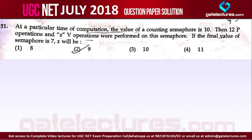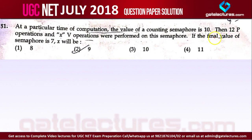This question is very easy. It says: at a particular time, the value of a counting semaphore is 10. The initial value of the semaphore is 10, then 12 P operations are performed. P means the wait operation on a semaphore. On a semaphore we have 2 operations — the wait operation and the signal operation, also known as P and V. The wait operation decreases the value of the semaphore by 1, and the signal operation increases the value by 1. It says 12 P operations and x V operations were performed. If the final value of the semaphore is 7, what is the value of x?